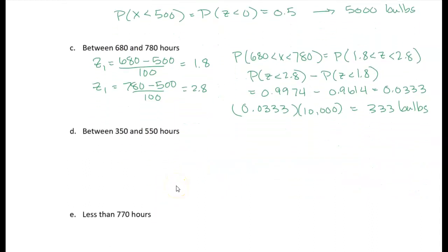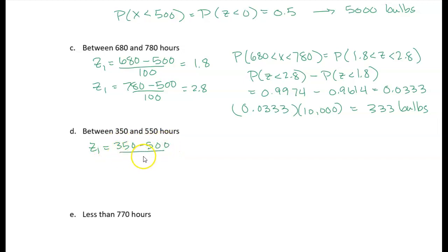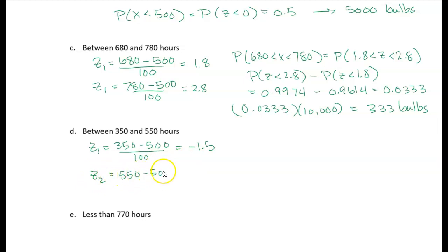The next one is very similar — we want the number of bulbs lasting between 350 and 550 hours. Let's calculate the z-scores. For 350: 350 minus 500 divided by 100 gives us negative 1.5 — that's 1.5 standard deviations below the mean. For 550: 550 minus 500 divided by 100 gives us 0.5 standard deviations above the mean.